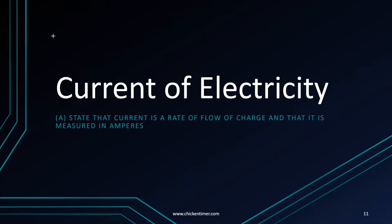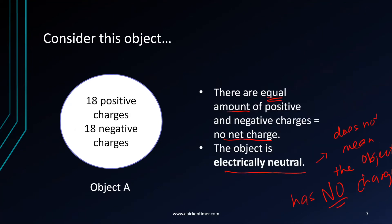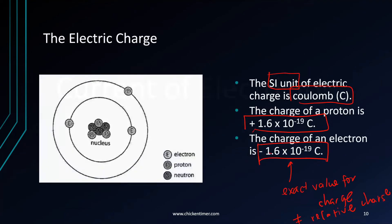This is a revision from Secondary 2. You need to know what current is. Earlier on we covered positive and negative charges. The key takeaway is that the SI unit for charge is Coulomb. The charge of a proton is 1.6 times 10 to the power of negative 19 Coulombs, and the charge of an electron is the same but negative.